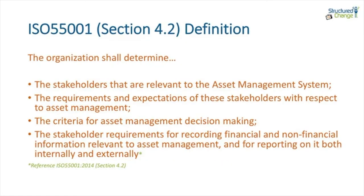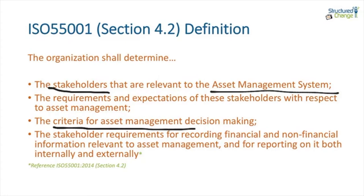Under section 4.2 we can see that we're interested in stakeholders that are relevant to the asset management system, the requirements and expectations of these stakeholders, and the criteria for asset management decision-making. Very important are stakeholder requirements for recording financial and non-financial information relevant to asset management — for both internal and external stakeholders. It's a pretty dry read, so let's look at how I articulate this back to sponsors when we enter a change process.